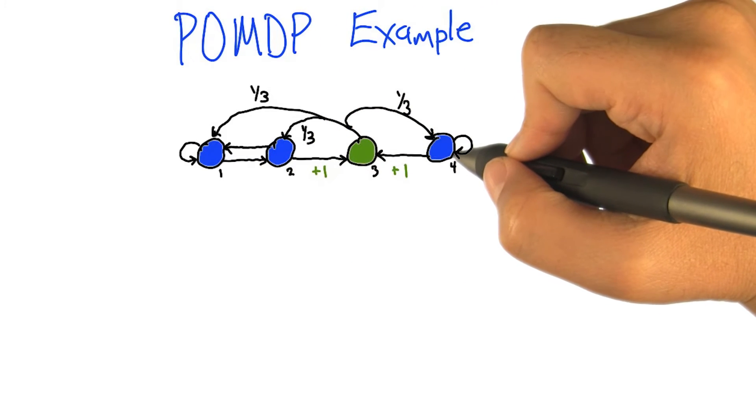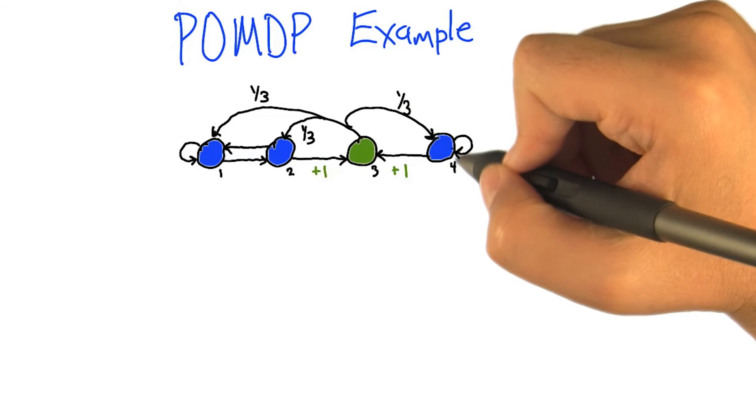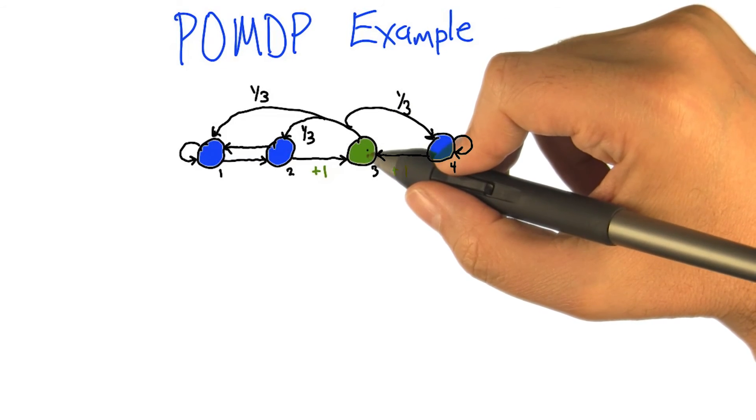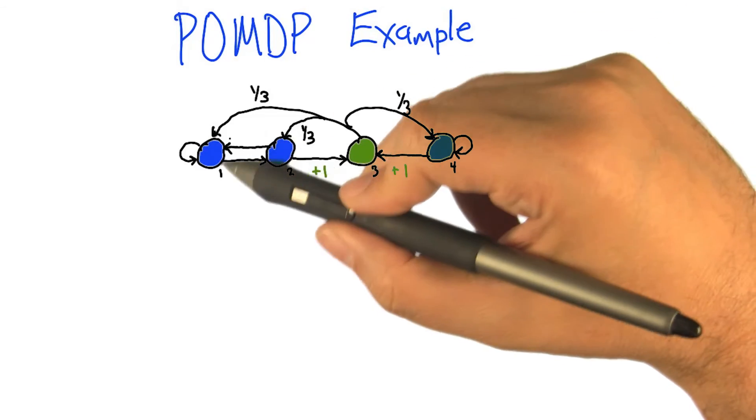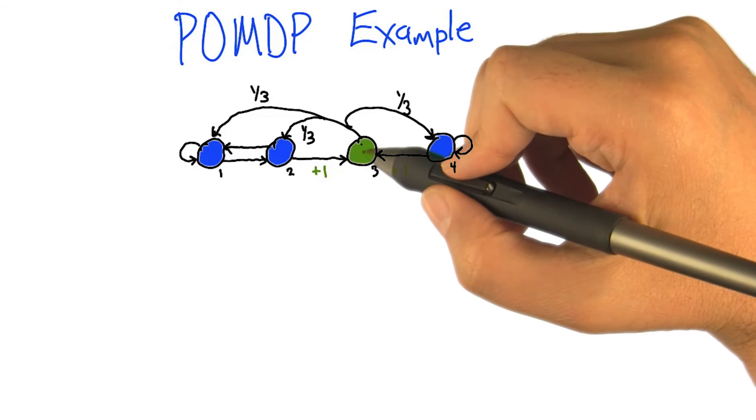Based on the immediate observation alone, we don't know really where we are. And we could be a place that's to the right of the goal, so we should go left to get reward. Or we could be a place that's to the left of the goal, which means we're going to have to go right to get reward. And so we're kind of in a tricky spot.